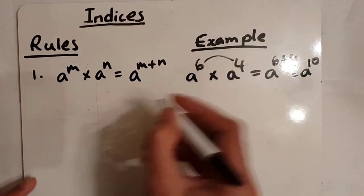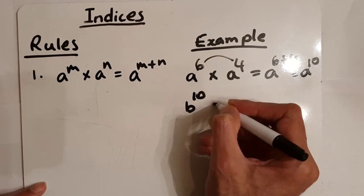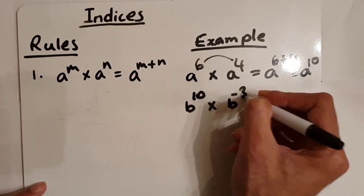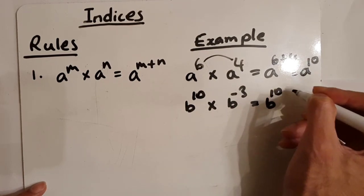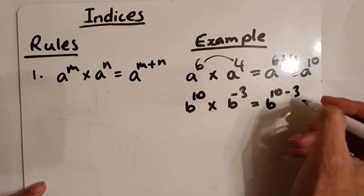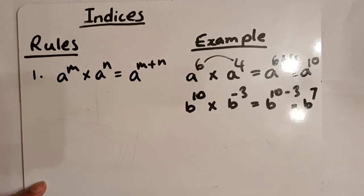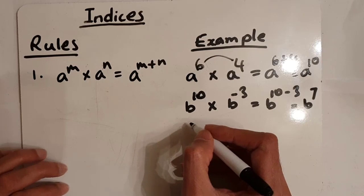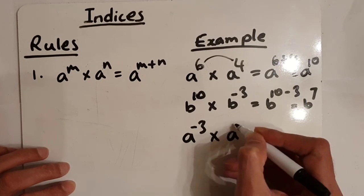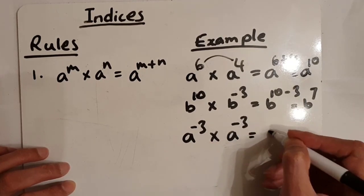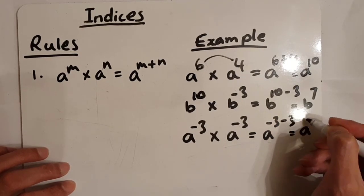Let's have a look at another example. You could possibly have b to the power of ten times by b to the power of minus three. Now in this case, we need to be very careful because we have a negative there. So it would be b to the power of ten minus three — we're adding a negative three — and that gives us b to the power of seven. If you have two negatives, for example a to the power of minus three times by a to the power of minus three, that gives us a to the power of minus three minus three, which is a to the power of minus six.